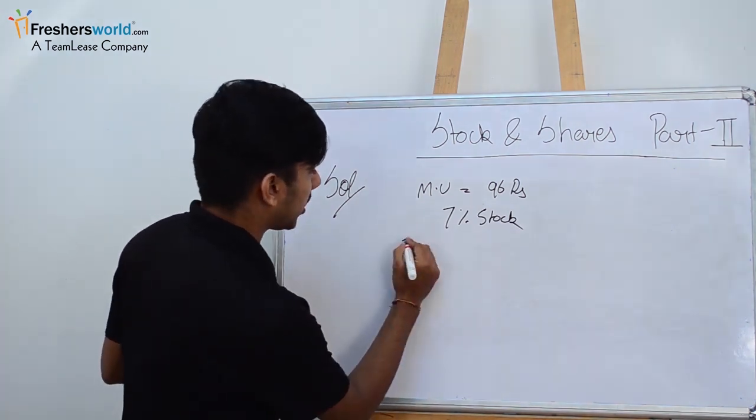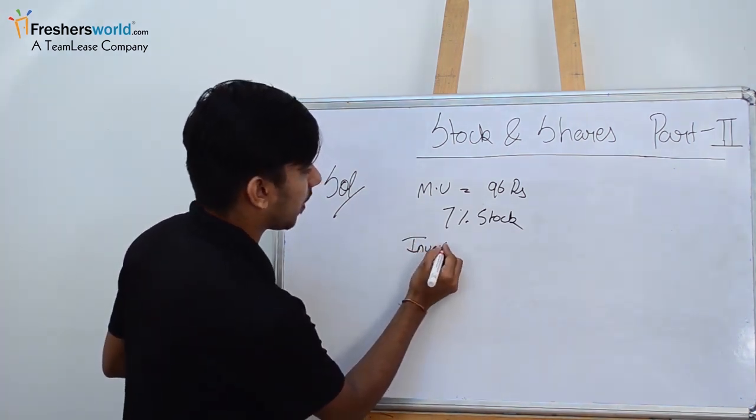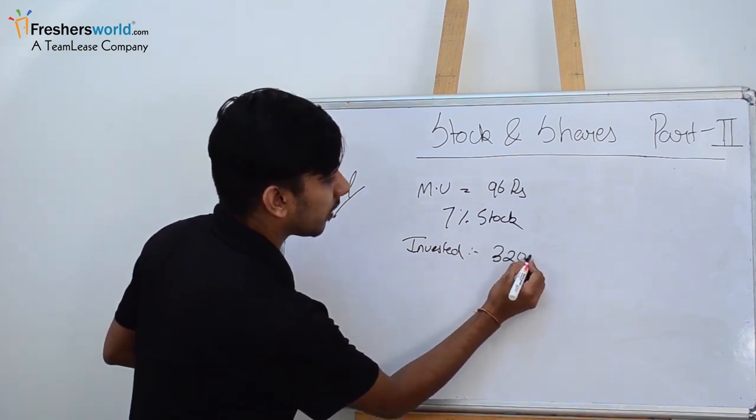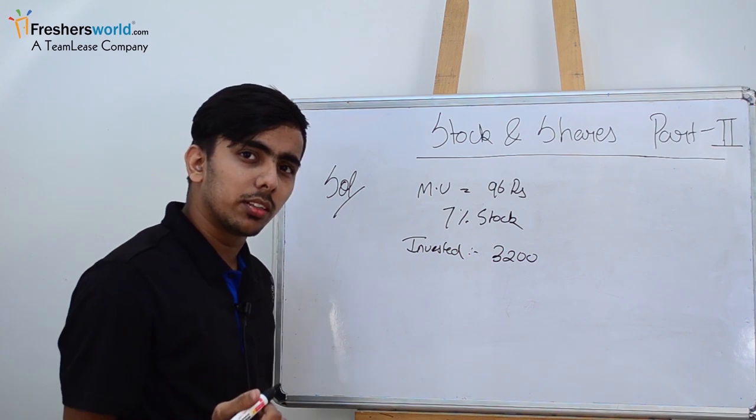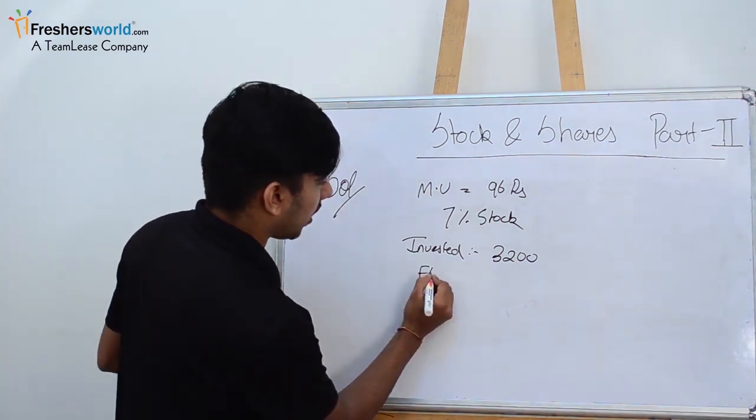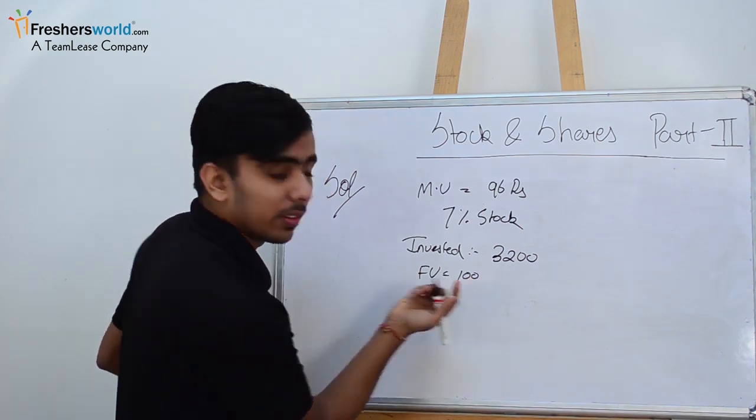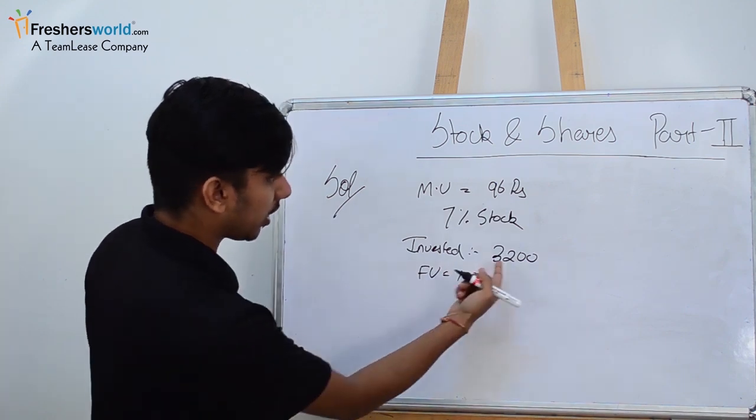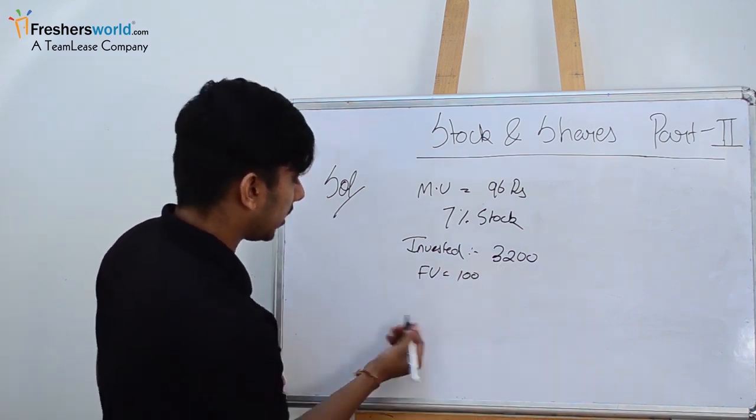Market value equals 96 rupees, 7 percent stock, and how much money we invested is 3,200. In the question they have not given us the face value, so it will be 100 only.